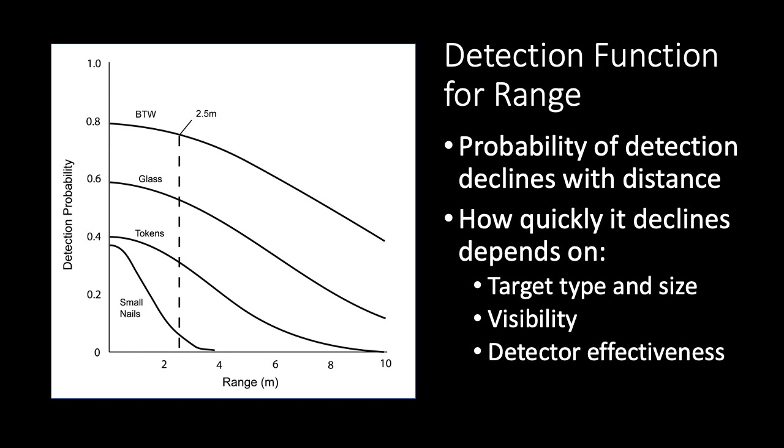In the example shown here, a very obtrusive kind of pottery called blue transferware has almost 80% chance of discovery at a range of 2.5 meters. At that same distance, we'd only expect to find about 55% of glass artifacts, and about 35% of tokens, which in this case were copper disks about the size of an American quarter. But we'd only expect to find about 5% of the small nails. In this case, the artifacts were distributed on a plowed field with relatively good visibility. And the detection functions would have been steeper if the visibility were worse.